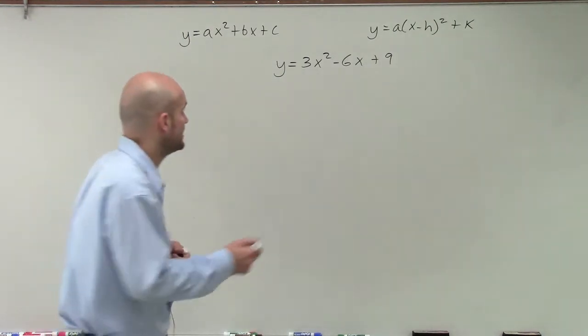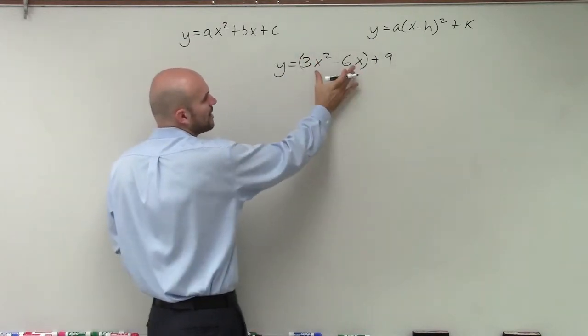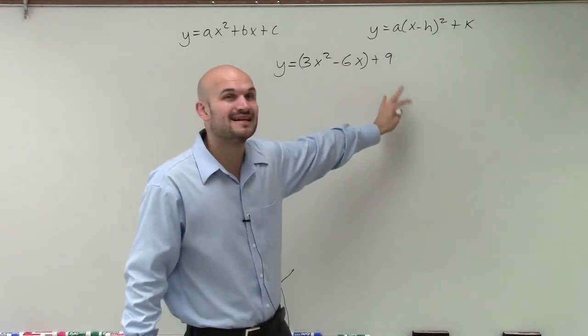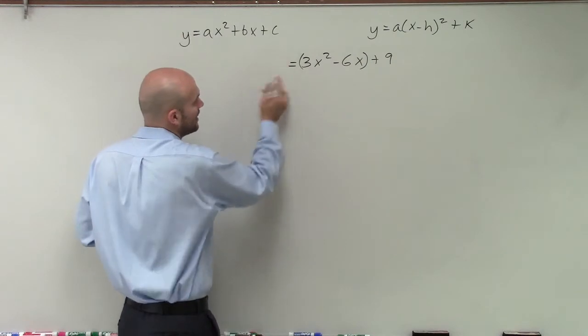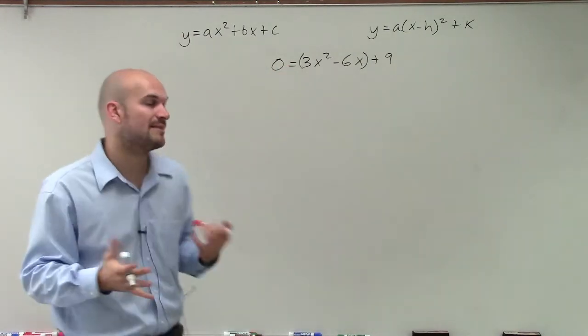So what I'm going to do is I'm only going to factor a 3 out of my first two terms, because remember, these are what I want to create my perfect square trinomial from. I can leave my 9 on the outside, and it's not going to affect the answer. All right, so we know we want to solve, so we're going to set it equal to 0, and we want to find the values of x that are going to make this equation true.